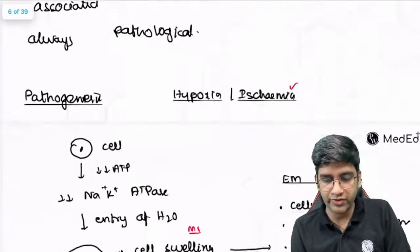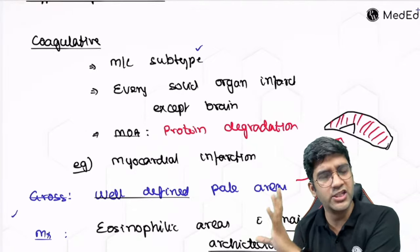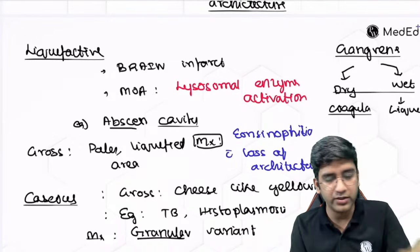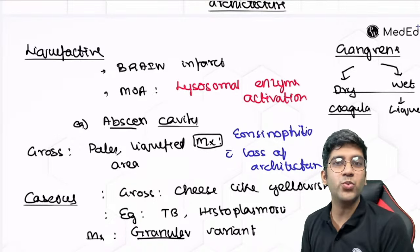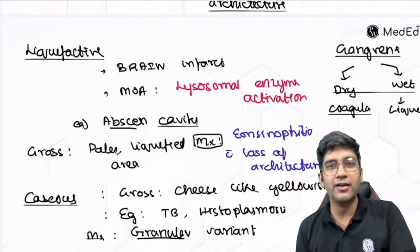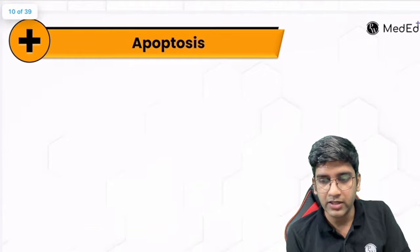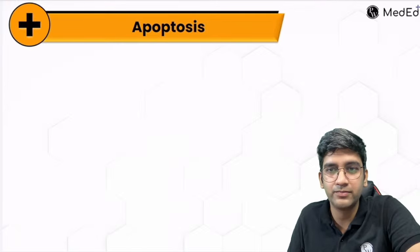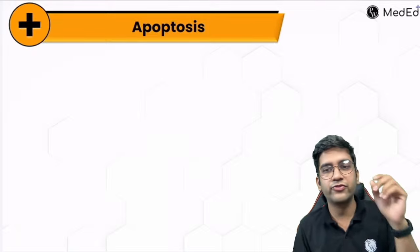That covers all five types of necrosis: coagulative, liquefactive, caseous, fibrinoid, and fat. Follow the template — definition, pathogenesis, then types. Coagulative is the most common so spend more time on it. For necrosis as a long answer, diagrams are generally not expected but if you can draw them, it gives an extra edge.